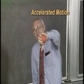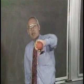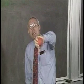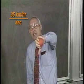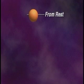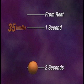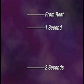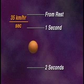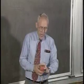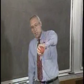As it falls, it speeds up. The acceleration of that falling ball is about 35 kilometers per hour each second. So if you drop it from rest, after one second it's going 35 kilometers per hour, after the second second it's 70 kilometers per hour. There is one significant force causing that acceleration.